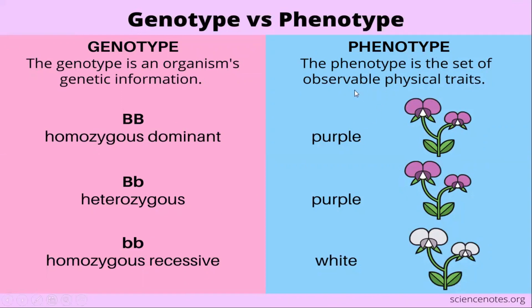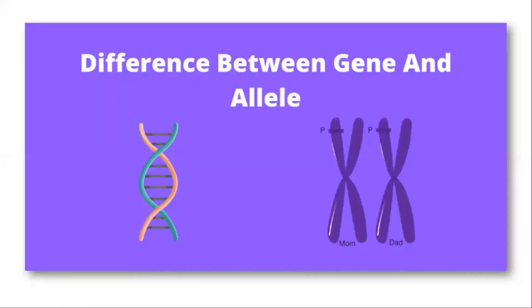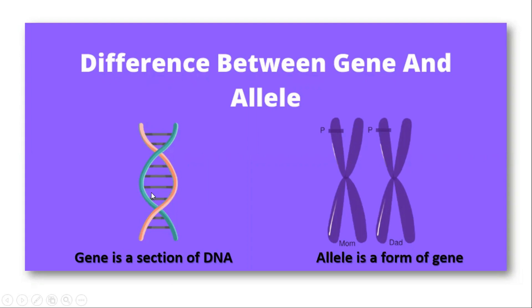Phenotype is an observable physical trait. Genotype is a section of DNA, and it is a form of gene.